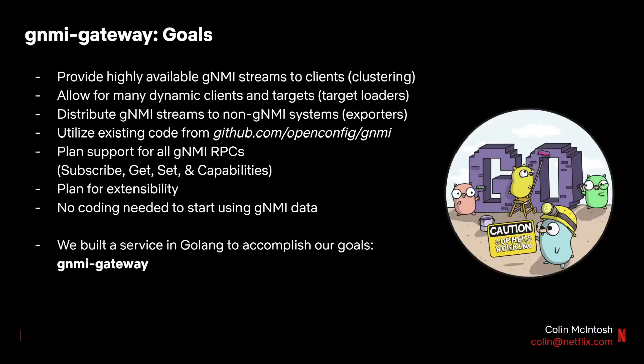Following this survey of existing systems, we concluded that none of them fit our needs and we decided to build our own. With this new system, we wanted a service that would provide highly available GNMI streams to consumers with clustering. As our network is ever-evolving, we wanted to allow for dynamic target loading so that GNMI targets and consumers can come and go without needing to redeploy or reconfigure the service. Much of our existing infrastructure is GNMI-unaware today, so we also needed to export streaming telemetry data to non-GNMI services such as our time series database or our big data platform. We also wanted to reuse as much existing reference work as possible and plan to support all GNMI RPCs as well as future extensibility.